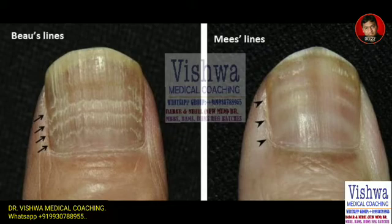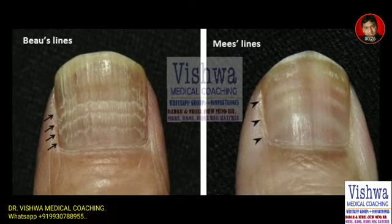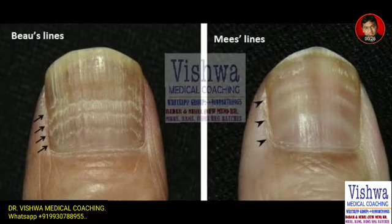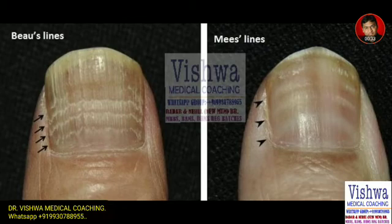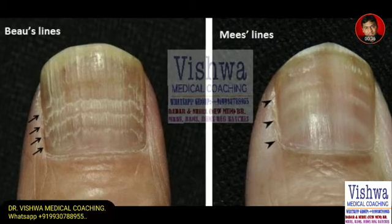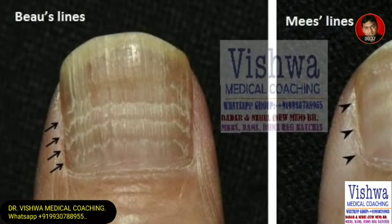What are the similarities? Both of them are white lines, both of them lie horizontally across the nails, both of them are multiple in nature, and both of them are commonly found in middle-aged people.